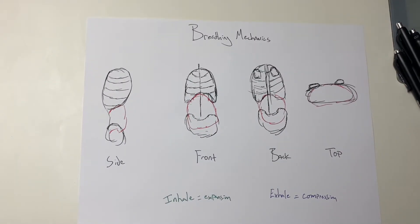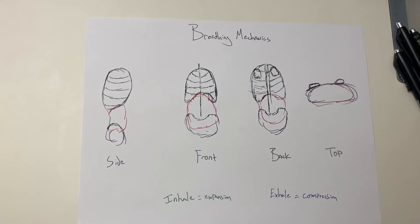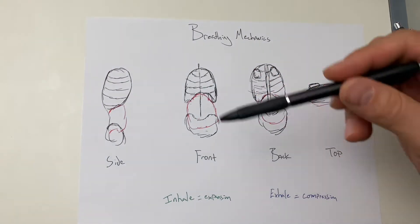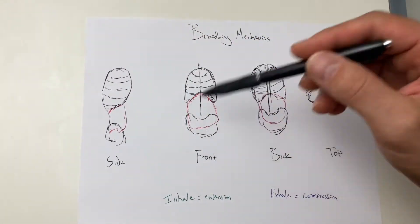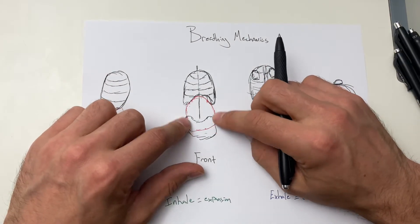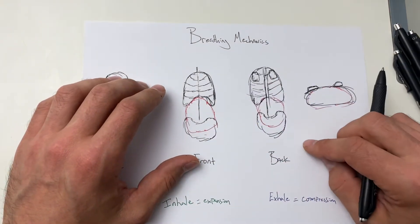Now I want to break down what we're looking for when we look at the ribcage when we take an inhale and an exhale. So as you can see, this is a side view of our skeleton, just the ribcage and the pelvis, and the red is the thoracic diaphragm, the abdominal wall, and the pelvic floor diaphragm.